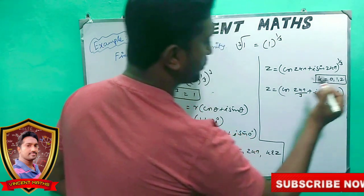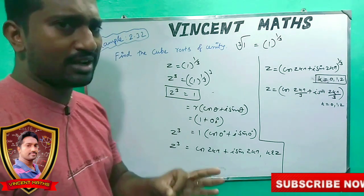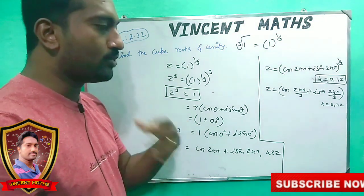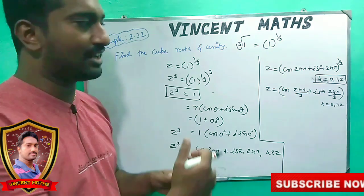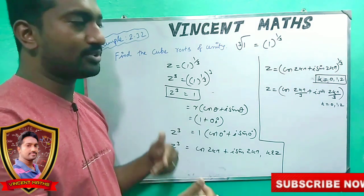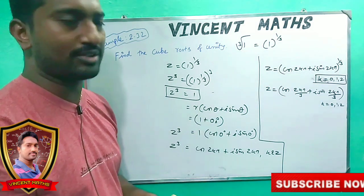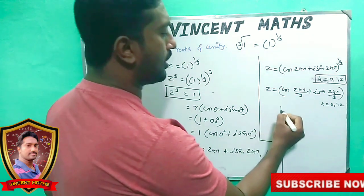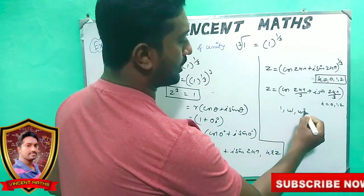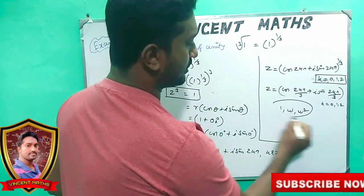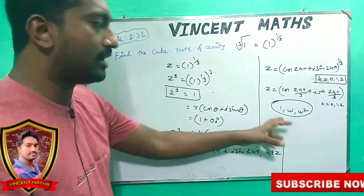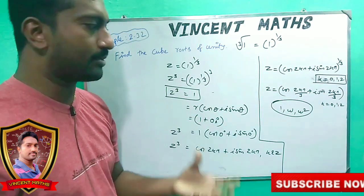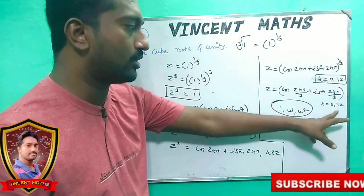Now we have 3 values. The cube root gives n equals 3 values. What are the 3 values? By theory, the 3 values are 1, omega, and omega squared. K is equal to 0, 1, 2.